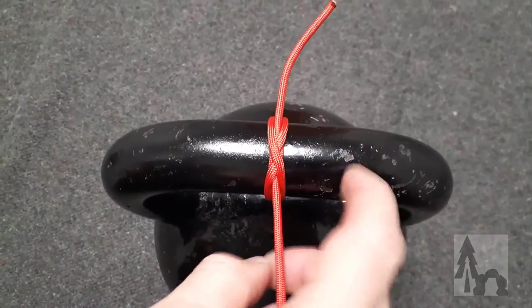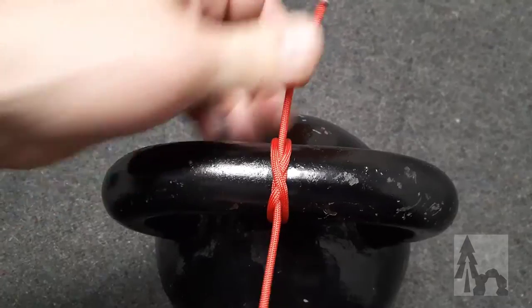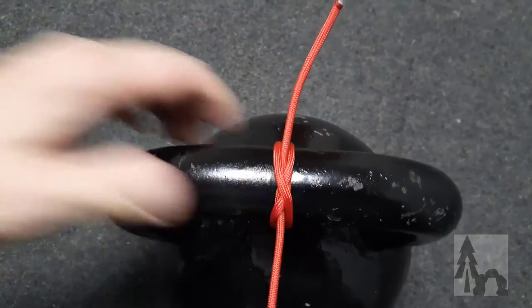Sometimes with natural cordage, hemp or jute, or a larger rope, this constrictor knot will be so tight it's almost impossible to come free or untie—you just have to cut it.